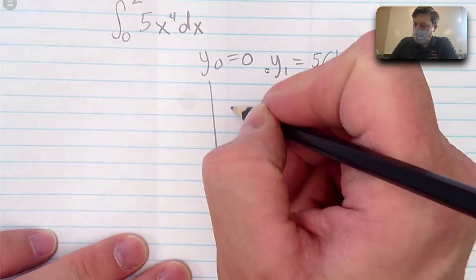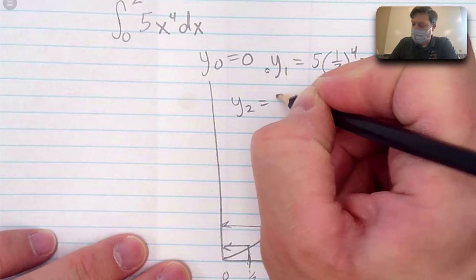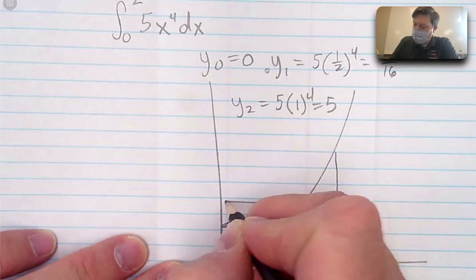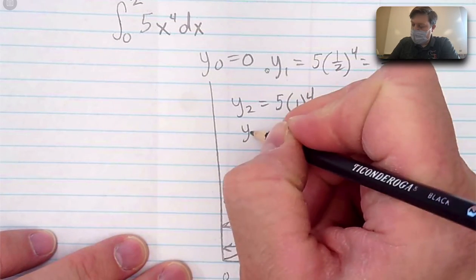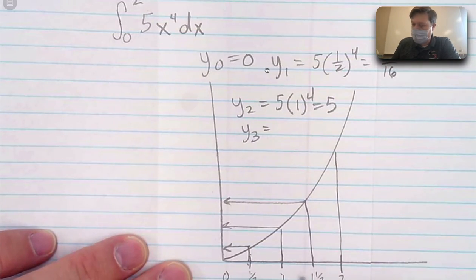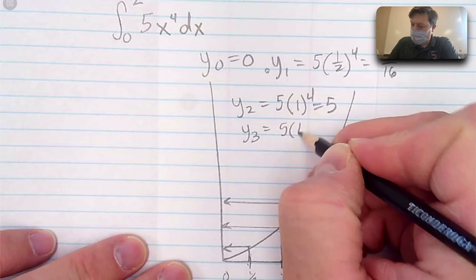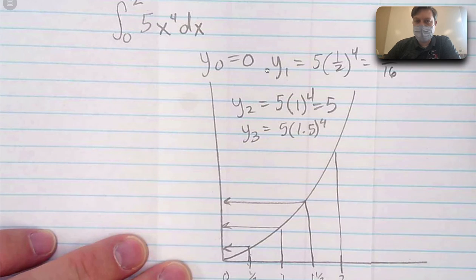You need to know that for the next one up. So that would be y sub 2 equals 5 times 1 to the 4th power. We need to know that for y to the 1 half. That's the third number. The third 0, 1, 2, 3. And that would be 5 times 1.5 to the 4th.